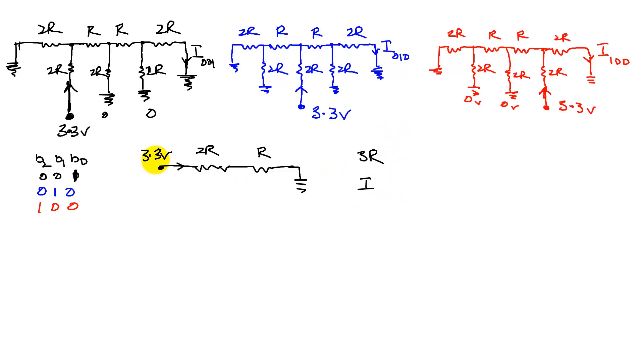The current, as we see here, that is leaving out of this node, or this node, is simply given by 3.3 divided by 3R.